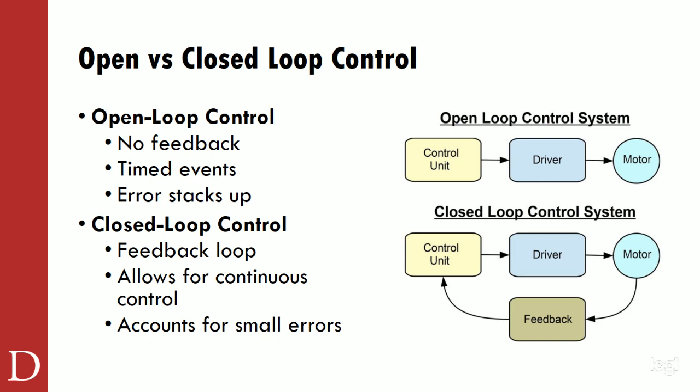You know as well as I do that that doesn't work out so well in the real world, because we have variables that might constrain the ability to do that. Think of setting cruise control in your car at 55 MPH. As the car hits a hill, it needs to know it's slowing down and needs to speed up. That is closed loop feedback — the ability to monitor not only the set point of 55 MPH, but that the actual measured variable is also 55 MPH. So if you slow down, you speed up a little bit.